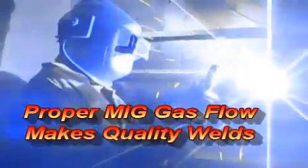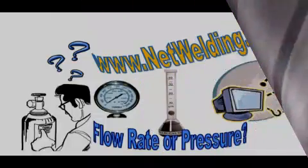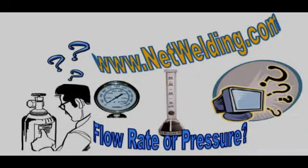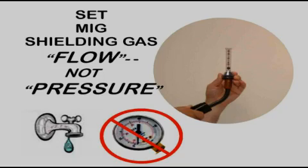Proper MIG shielding gas flow is critical to making quality welds. We receive inquiries asking what MIG shielding gas flow rate should I use, and some ask what gas pressure do I set. Unlike oxy-fuel welding where gas pressures are set, with MIG welding the gas flow is much lower and flow rate is set, not pressure. Additional information about the reason is presented in this video.